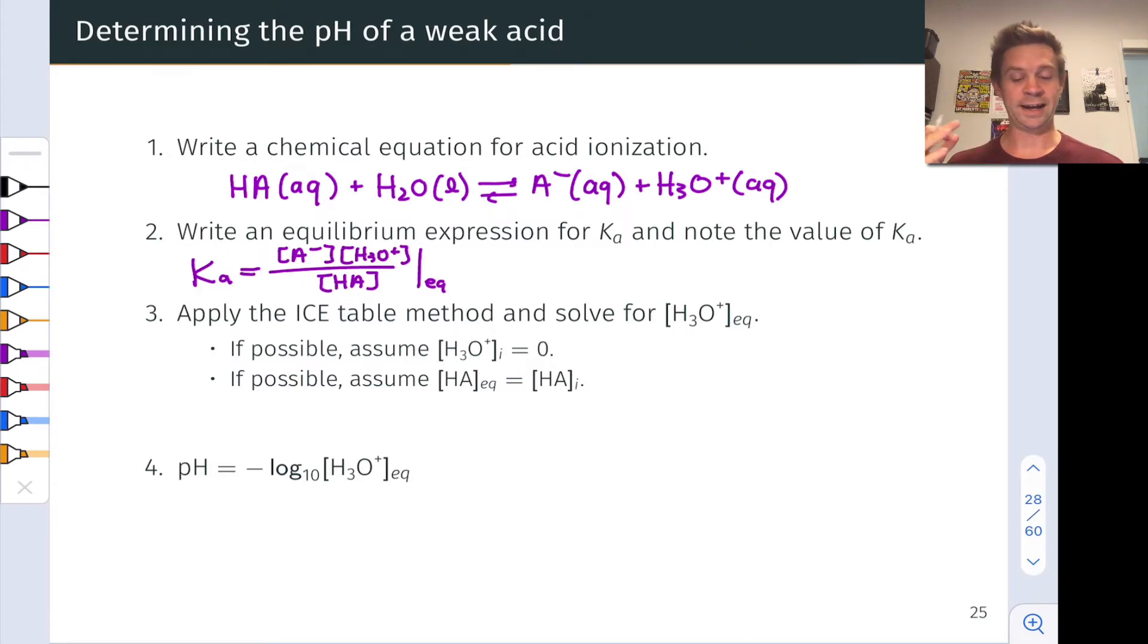Next, we're going to apply the ICE table method and ultimately solve for the equilibrium concentration of hydronium. If we're headed towards pH, I need to have that before I can calculate a pH value.